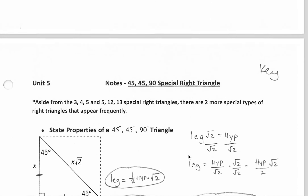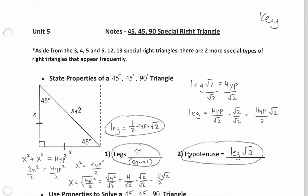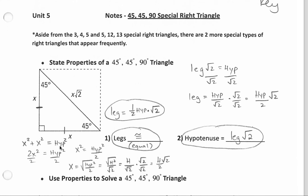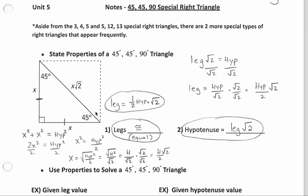Now let's see why we need to learn that as we talk about the 45-45-90 special right triangle. This right triangle comes from just cutting a square in half, and when we do that we have created an isosceles right triangle, meaning that it has two equal side lengths. If we use the Pythagorean theorem to solve this right triangle, we know the sides are going to be the same — the leg squared plus the leg squared equals the hypotenuse squared. We have 2x squared on one side, and to keep solving for x, that side length, we could divide both sides by 2, so the hypotenuse squared divided by 2 equals x squared.